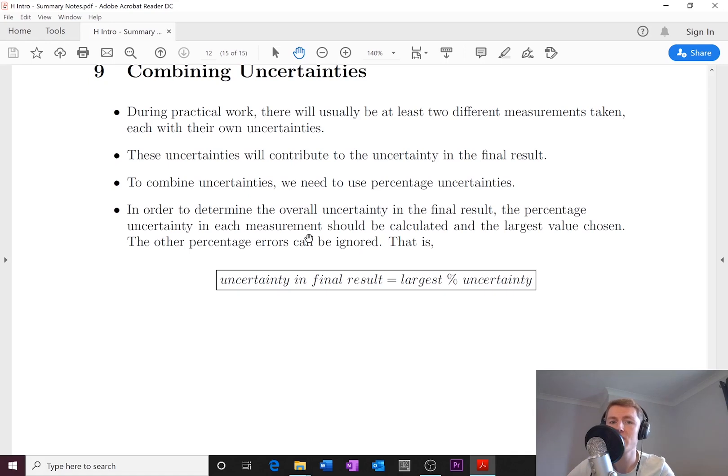In order to determine the overall uncertainty in our final result, our speed in this case, the percentage uncertainty in each measurement should be calculated and the largest value chosen. The other percentage errors can be ignored. That means our uncertainty in the final result is equal to the largest percentage uncertainty.